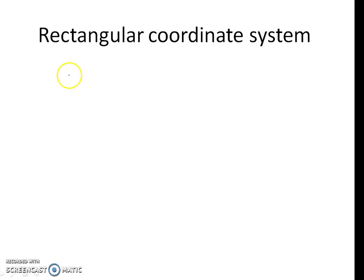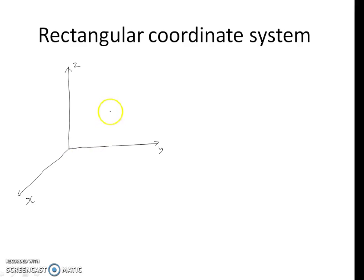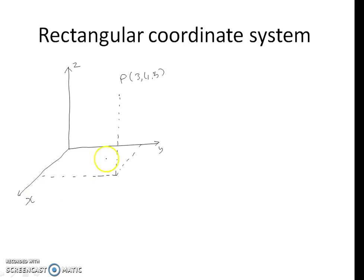In the Rectangular Coordinate System, we have three mutually perpendicular axes, which are given by X, Y, and Z. This is the origin. Any point P, let's say a point given by (3, 4, 5), has an X-coordinate which is 3 in this case, a Y-coordinate which is 4, and a Z-coordinate which is 5.